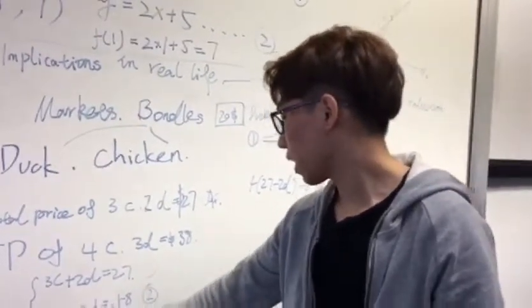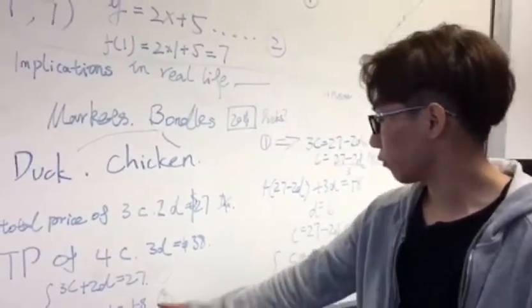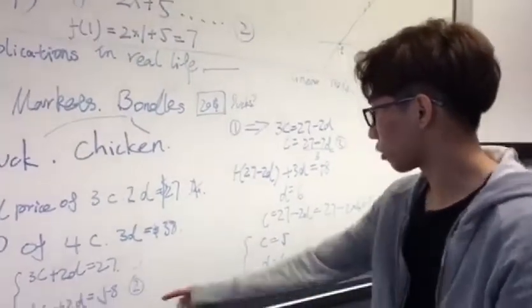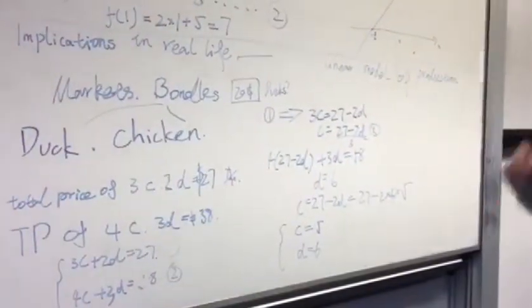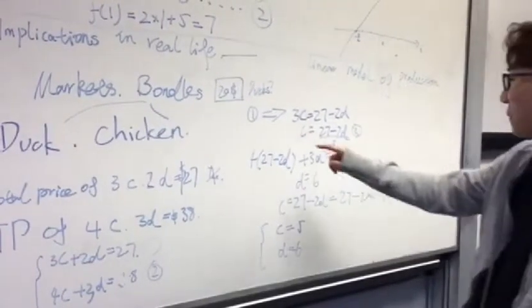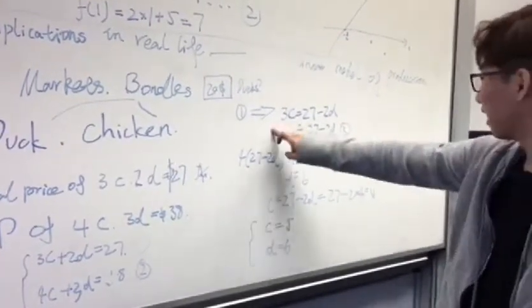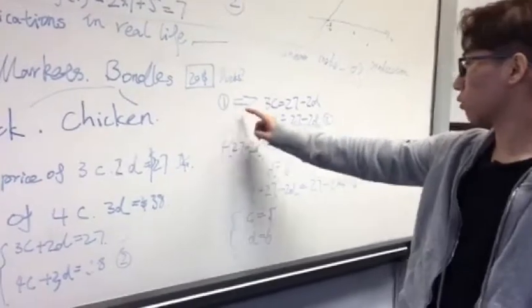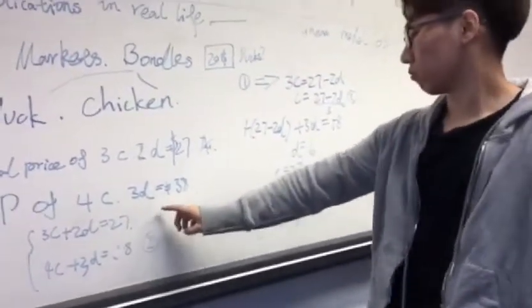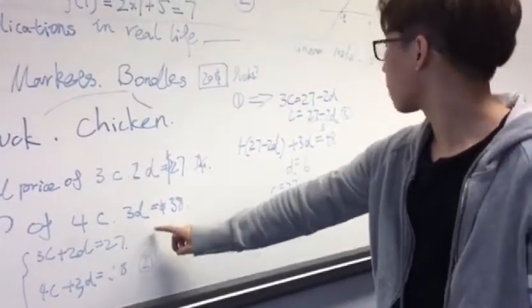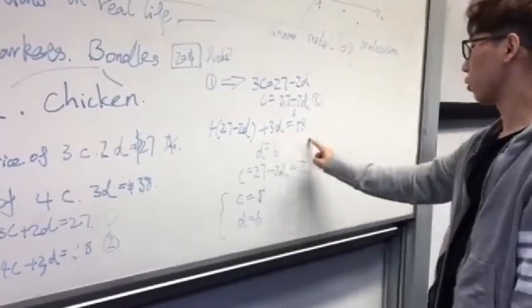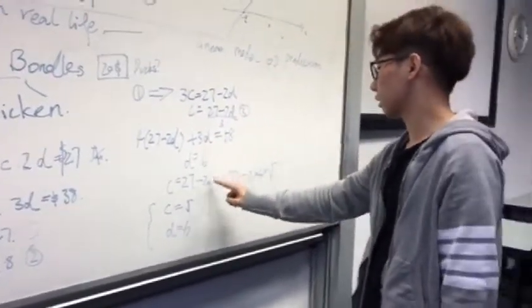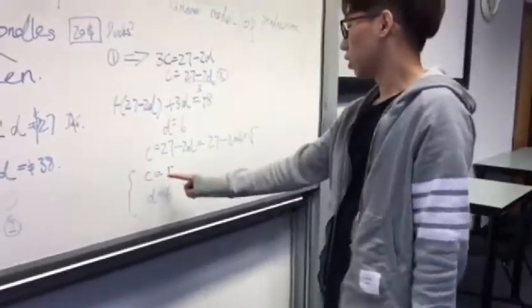4C plus 3D equals $38. So just solve the equations. Reverse number 1 to here. So we can solve and get D equals 6 and C equals 5.